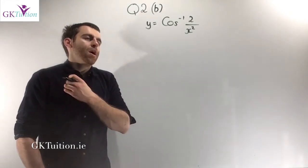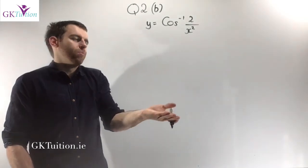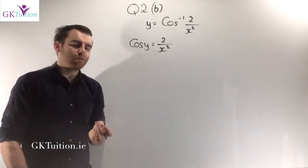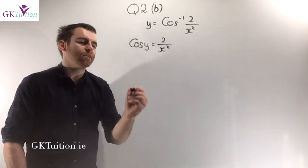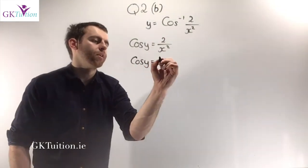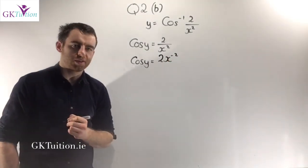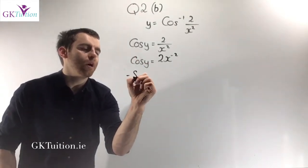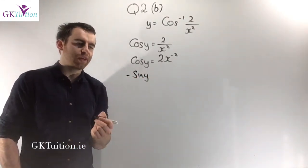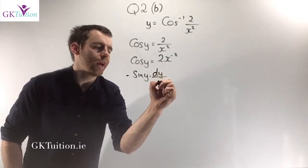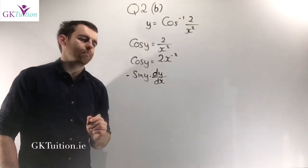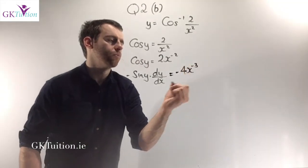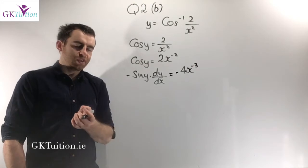First, eliminate the inverse trig by bringing cos to the other side: cos y equals 2 over x squared. Rewrite the right hand side as 2x to the power of minus 2 to avoid a fraction. Now differentiate both sides. The derivative of cos y is minus sine y, but from implicit differentiation, whenever you differentiate a y you multiply by dy dx, giving minus sine y times dy dx. On the right, bringing minus 2 in front, minus 2 times 2 gives minus 4 and the power decreases by 1 to give x to the power of minus 3.